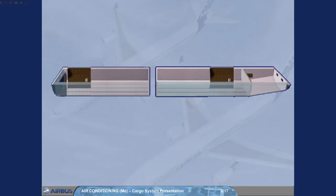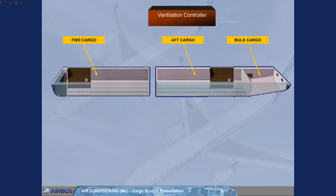The long range has three individual cargo compartments: forward, aft, and bulk. The ventilation and heating system to these compartments is controlled by a computer called the ventilation controller, which has two channels. Channel 1 is active and channel 2 is a backup.